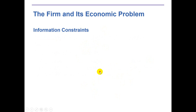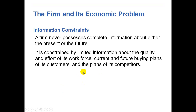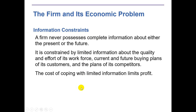The second is the information constraint. A firm never possesses complete information about either the present or the future. The future is uncertain — the firm is constrained by limited information about the quality and effort of its workforce. It is also quite uncertain what the future buying plans of customers will be, and what kind of competitors will be in the market. It is quite difficult for the firm to produce optimally with limited information. Also, trying to obtain more and more information requires paying more, which reduces profit.